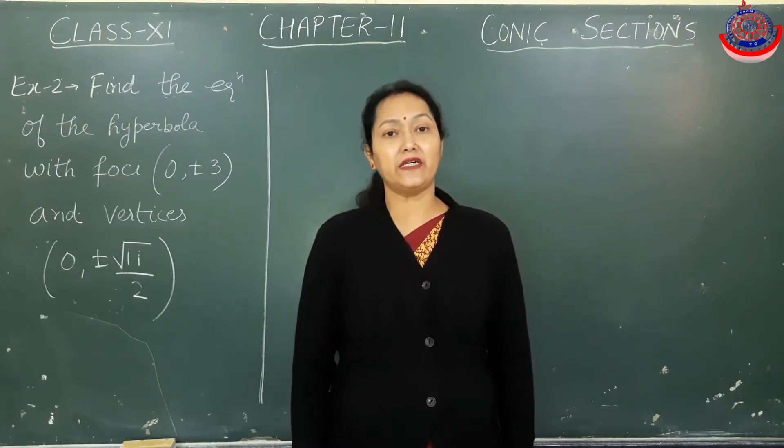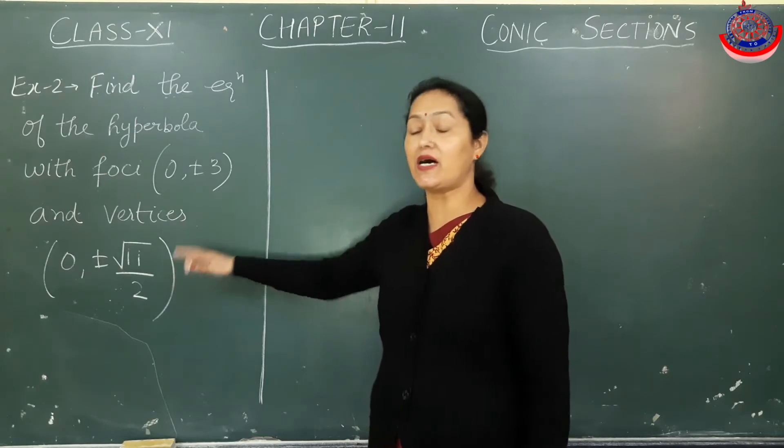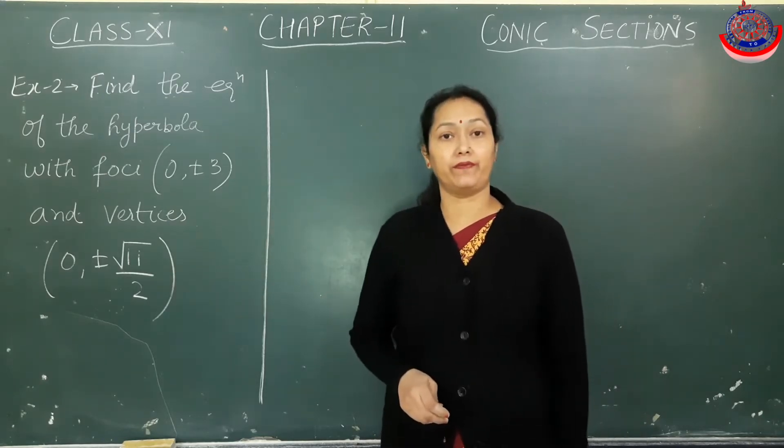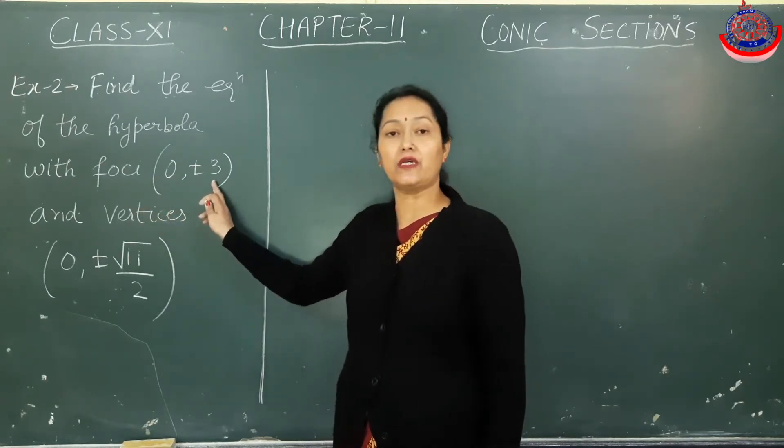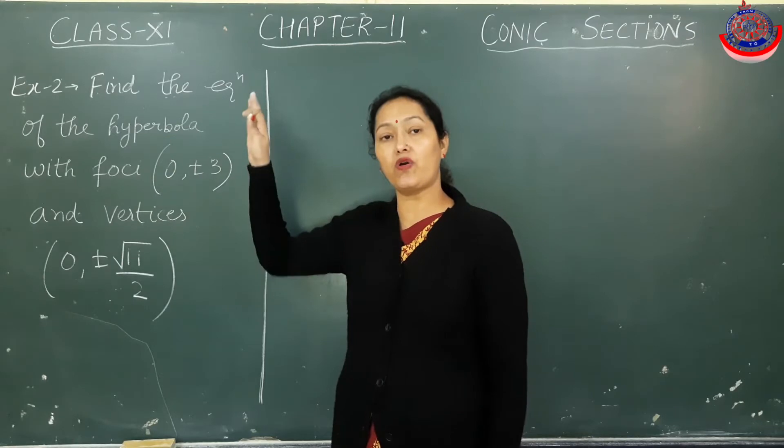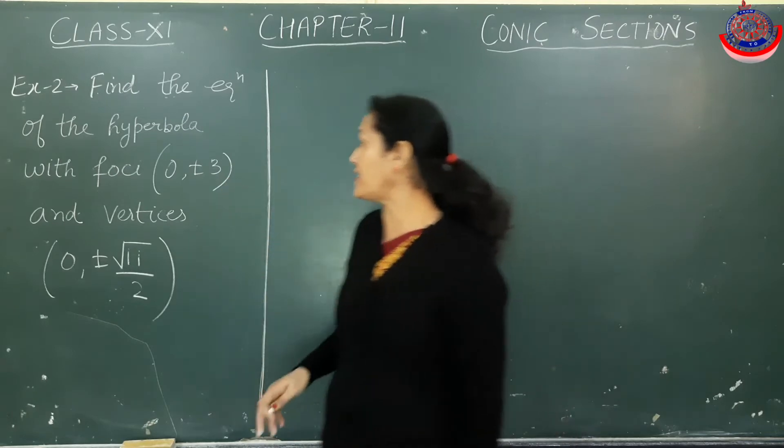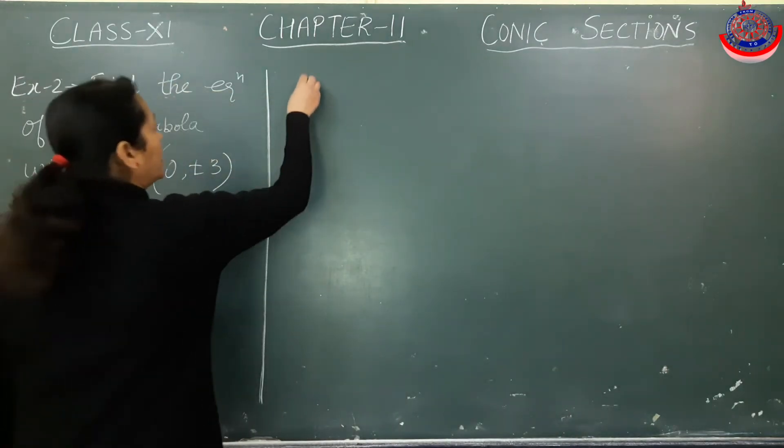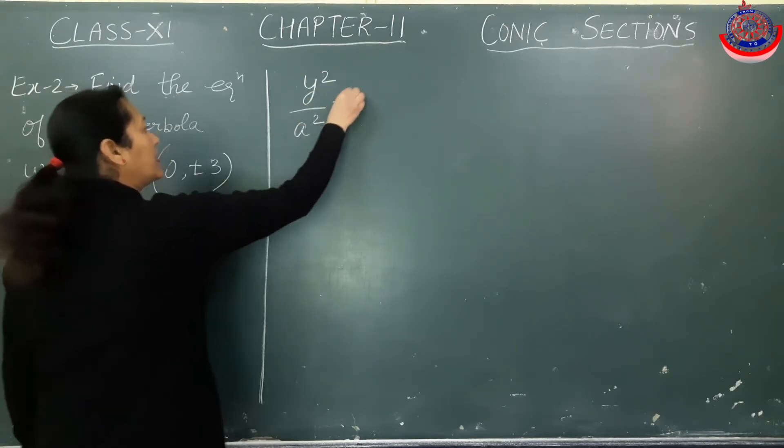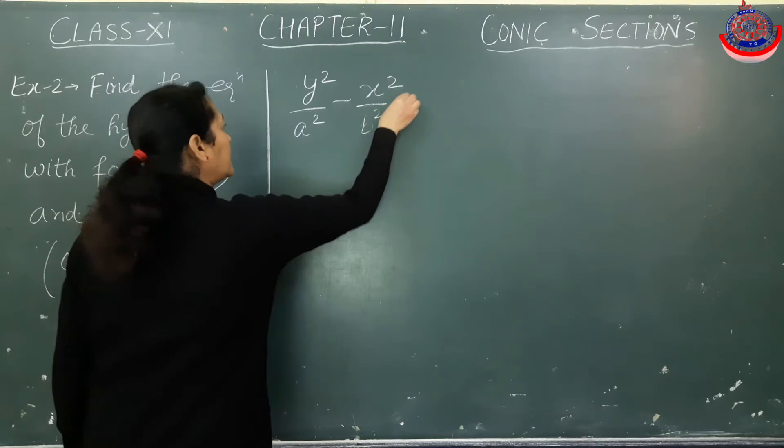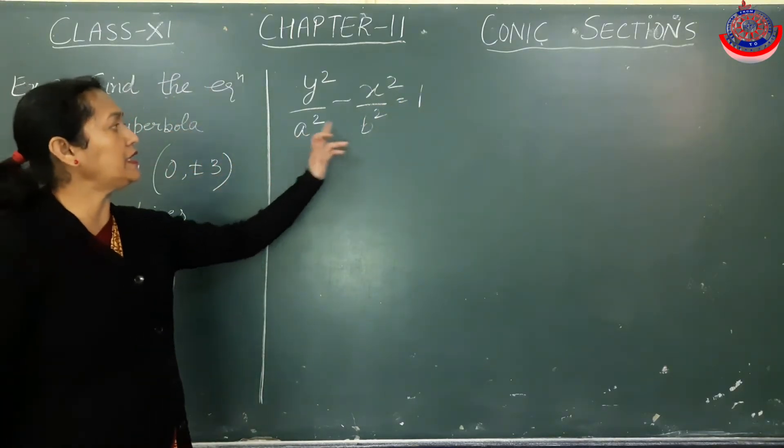The second example: here they have given us focus points and vertices, and they are asking us to find the equation of the hyperbola. If you look at the focus points (0, ±3), focus is lying along y-axis, means transverse axis is y-axis. So in this case, our equation will be y²/a² - x²/b² = 1. That means in order to frame the equation, we need a and b.